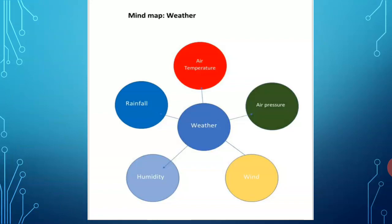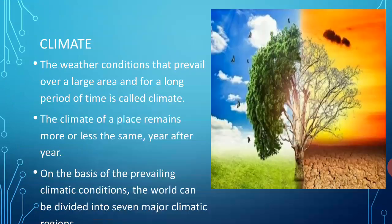To revise: weather is defined as the condition of air temperature, air pressure, wind, humidity, and rainfall in the atmosphere at a given place and time. Here, humidity means the moisture present in the air. Now let's see about climate.